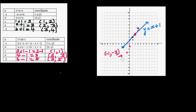Use a ruler to join the points. Always make a habit of writing the equation of the line — so this line is Y equals two X minus one.